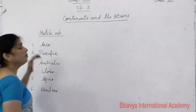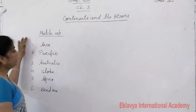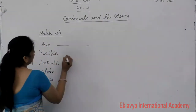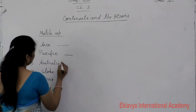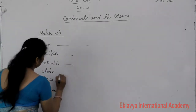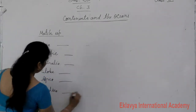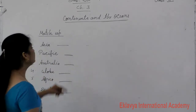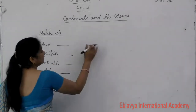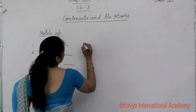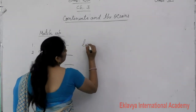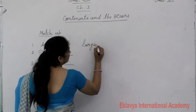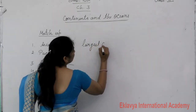First is the match-up exercise. The items are: Asia, Pacific, Australia, Globe, Africa, and the Dead Sea. Asia is the largest continent.